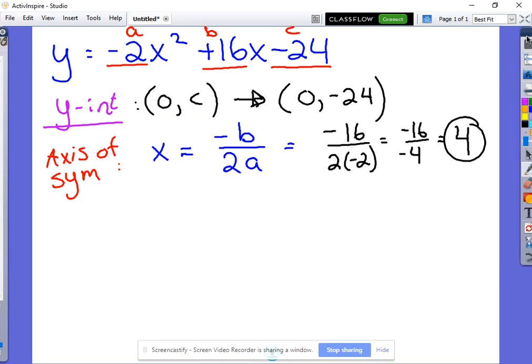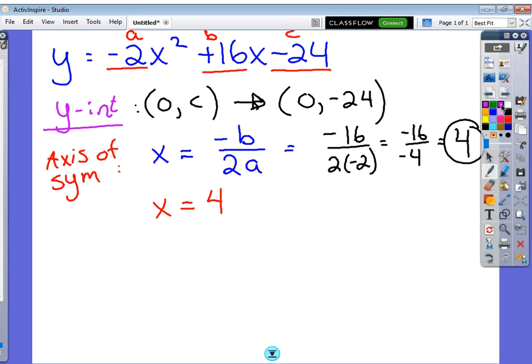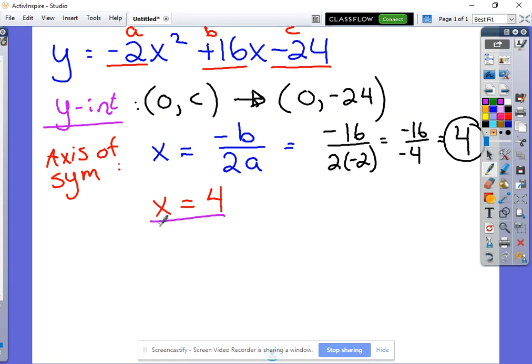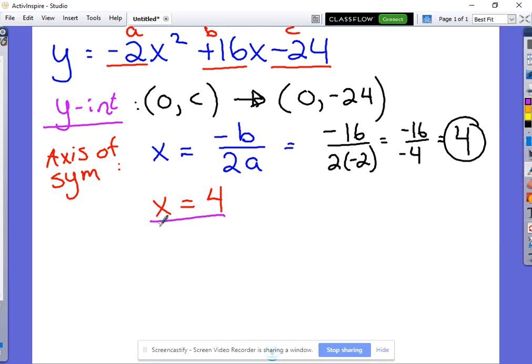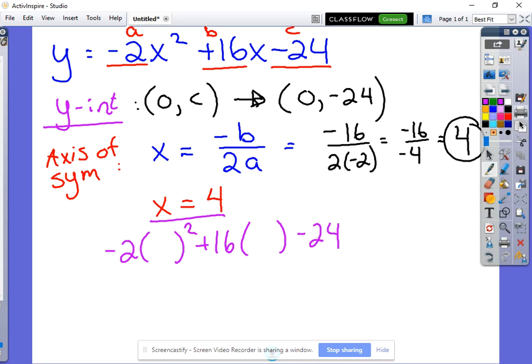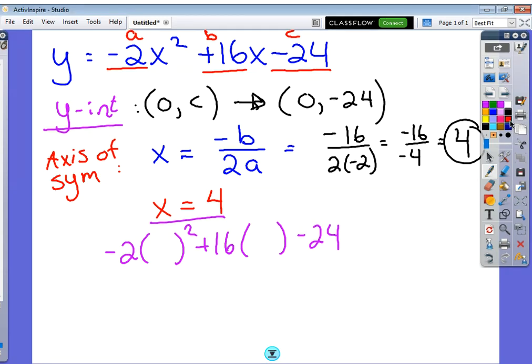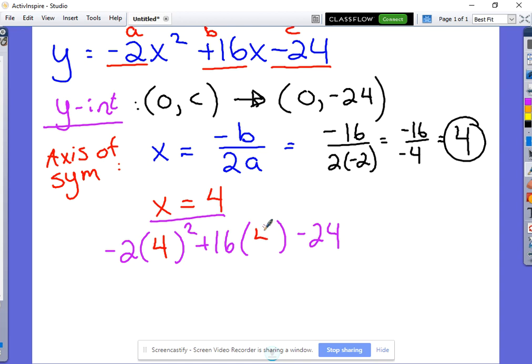We always want to present it as the equation x equals, you always write x equals positive 4. So now to find the vertex, we actually have to take this number right here and plug it in to our equation up above. So I'm just going to rewrite negative 2 times something squared plus 16 times something minus 24. And the number we're plugging in to each of those parentheses is that x value that we just found.